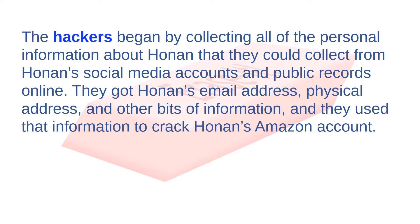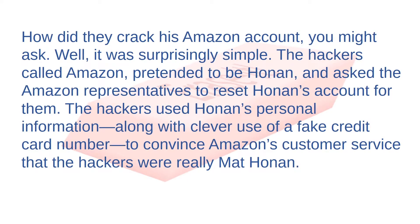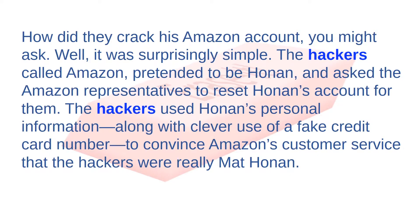The hackers began by collecting all of the personal information about Honan that they could from his social media accounts and public records available online. They got Honan's email address, physical address, and other bits of information, and they used that information to crack Honan's Amazon account. The hackers called Amazon, pretended to be Honan, and asked Amazon representatives to reset his account. They used Honan's personal information, along with a fake credit card number, to convince Amazon's customer service that they were really Matt Honan.